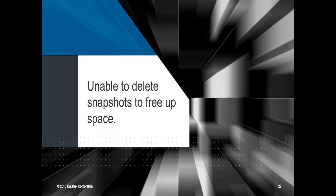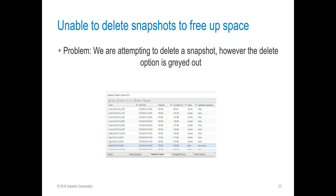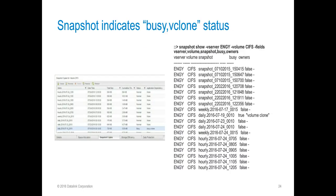The third issue we frequently see is when attempting to delete snapshots, somebody is unable to delete a snapshot to free up space in their volume. The problem is, as an administrator, you're attempting to delete a snapshot, however the delete option is grayed out and there is an application dependency on the volume. Here we see it's a busy v-clone state. On the left side, we have our snapshot copies tab for the volume SIFTS. We see the highlighted snapshot in the bottom states busy v-clone.